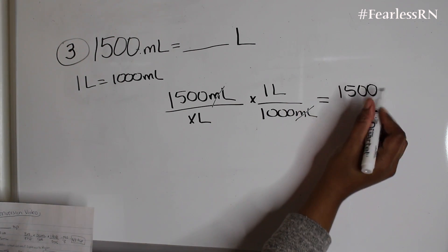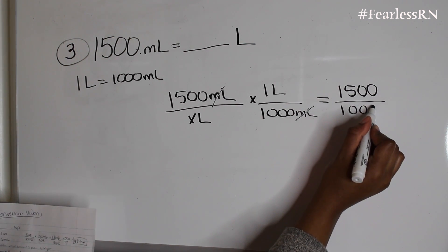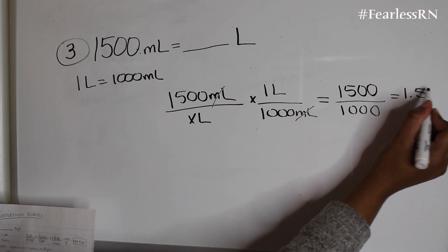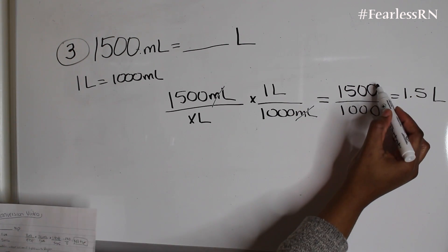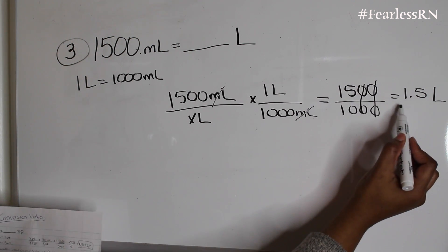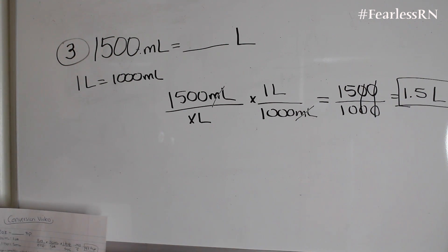So we get 1,500 over 1,000 and it equals 1.5 liters because when you divide you're left with that and you get 1.5 liters. So 1,500 milliliters equals 1.5 liters. So now you see why it's so important to know your metric table because it makes it much more easier and more faster to solve these problems.